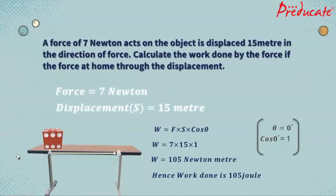In this numerical, force of 7 newton is acting on the object and then object is displaced by 15 meter in the direction of force. Therefore, force is equal to 7 newton, and displacement is equal to 15 meter.